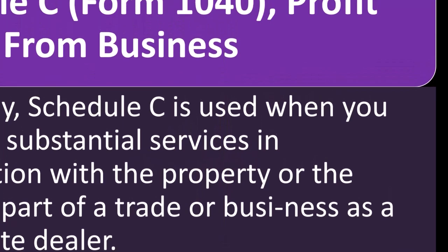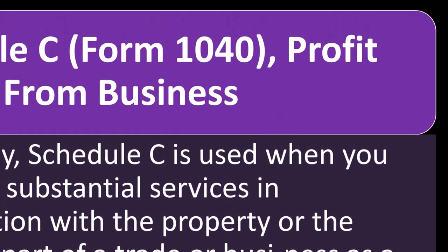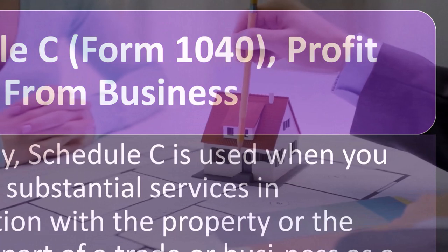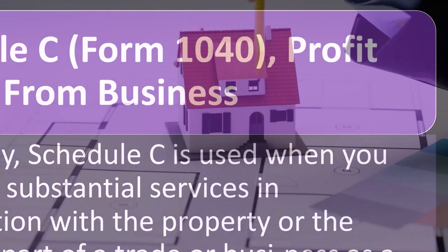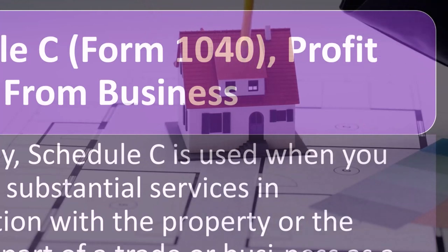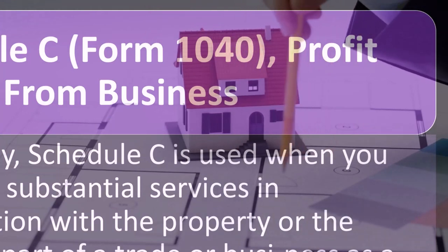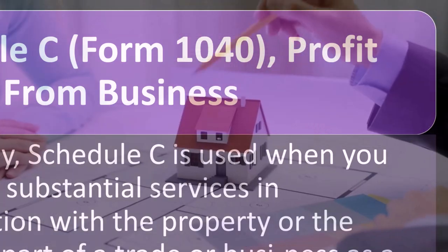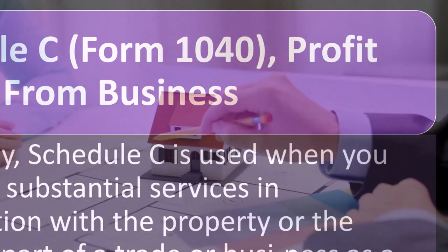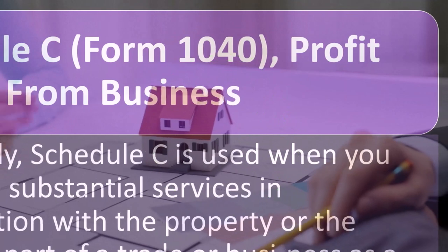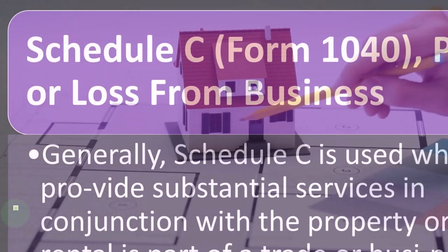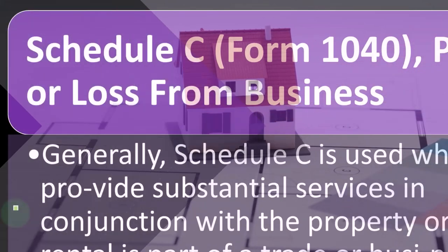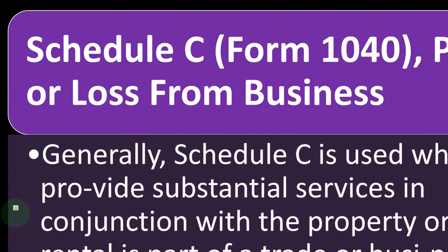People actually in the real estate business came back and said they weren't having passive income — they actively participate. Limiting their business more than other businesses beyond rental income was unfair. You can see the compromising situation that ended up happening, where we now have all these different rules on what qualifies as passive, active, and somewhere in between for rental property.